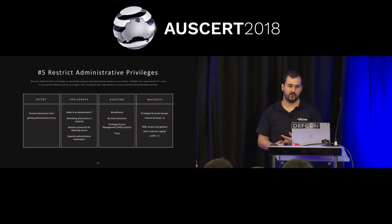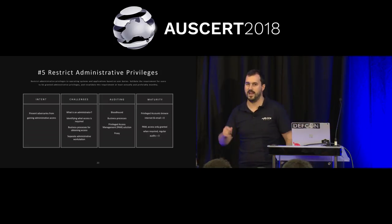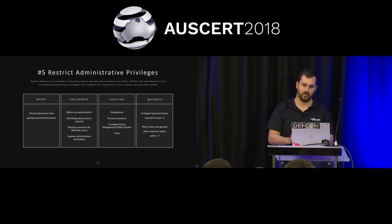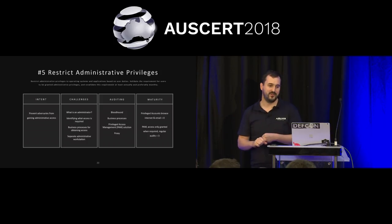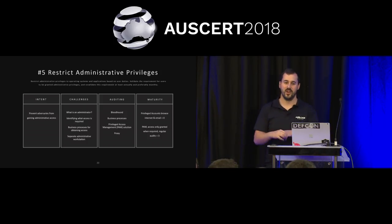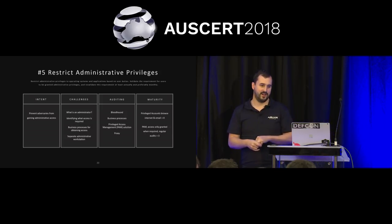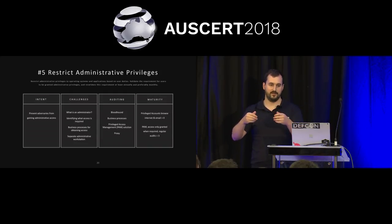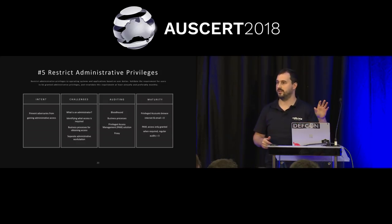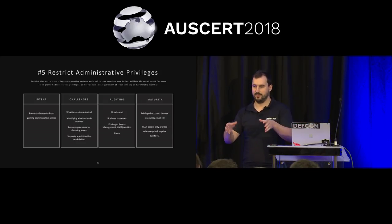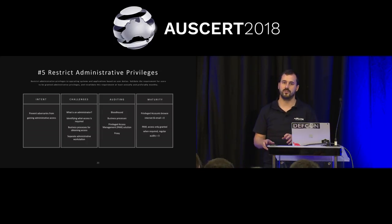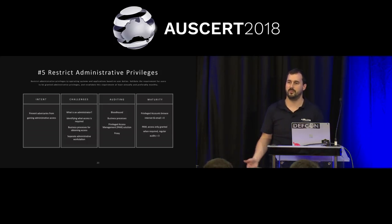Challenges are identifying what access users require and the business processes for obtaining access. It's important to have a defined process in your organization — if an administrator is starting and needs access, what access do they need, how do you provide it, and how do you review it regularly? There's a requirement in Australian government to use separate administrative workstations: two terminals on your desk, a standard user account and an administrative account, with the admin account only used on the workstation that has no internet or email. This is because if you type admin credentials on a machine with a keylogger, they'll capture that information.